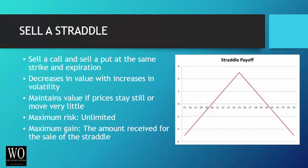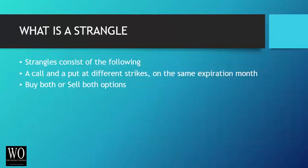If you sell a straddle, you've sold a call and sold a put at the same strike and expiration. When you sell a straddle, it decreases in value as volatility decreases — so when prices don't move much or stay the same, that lowers volatility and you maintain the value of the premium you received. Your maximum risk is unlimited, mostly because you've sold a call that can theoretically go up infinitely. Your maximum gain is the amount of money you received when you sold the straddle.